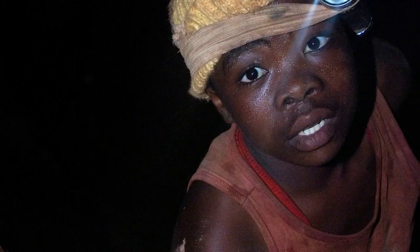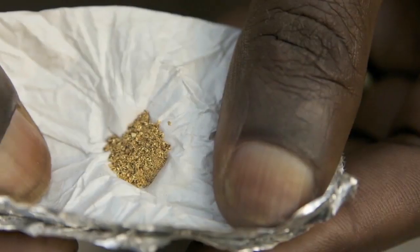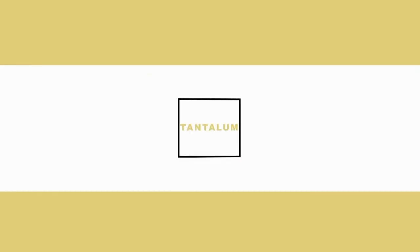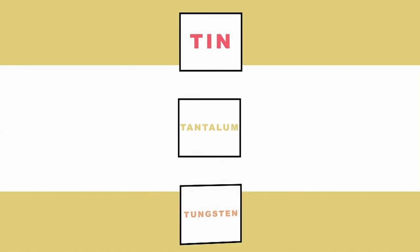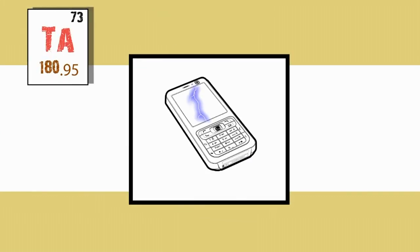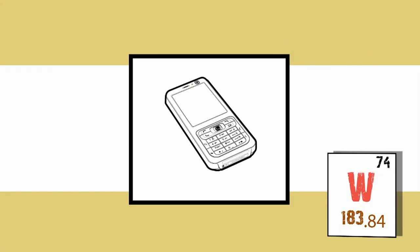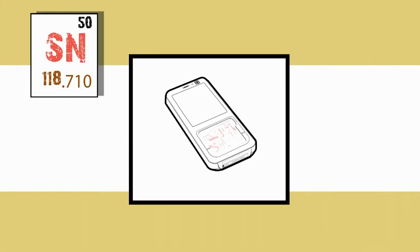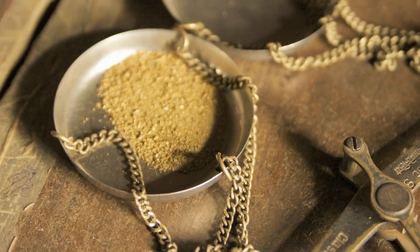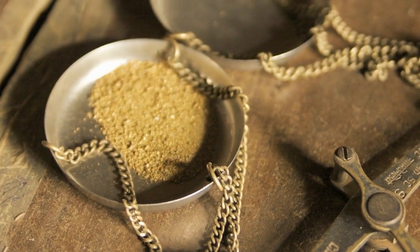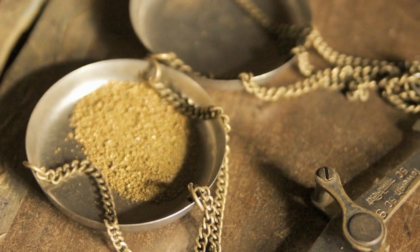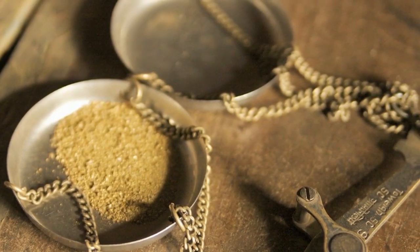Basically, there are four minerals that come from the Congo that are in every one of our electronics products: tantalum, tin, and tungsten. Tantalum stores electricity in your phone. Tungsten makes your cell phone vibrate, and tin is used to solder on circuit boards. Gold is used to coat the wiring, and it's the highest value metal inside every cell phone and laptop.